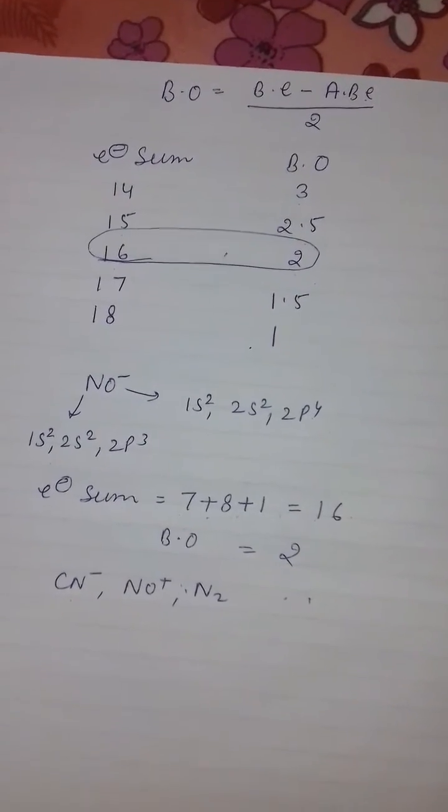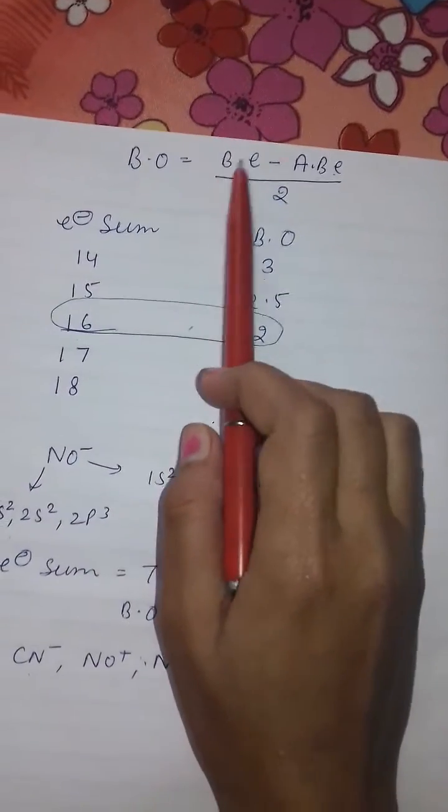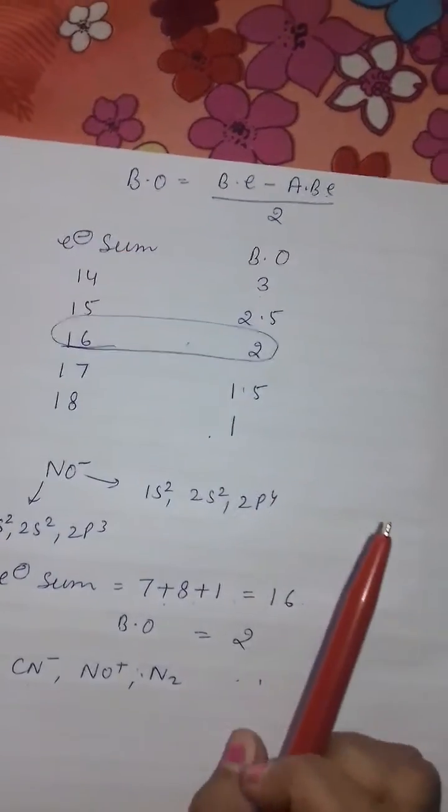Generally for the identification of bond order we use this formula: bond order is equal to bonding electron minus antibonding electron divided by 2. It is a very lengthy method.